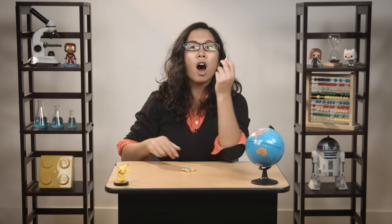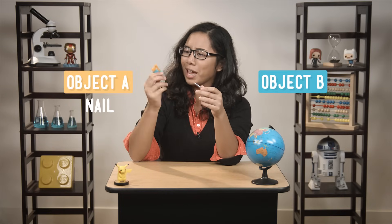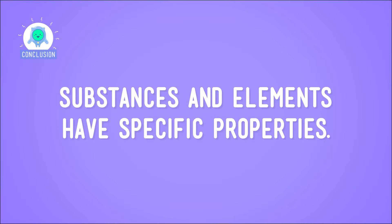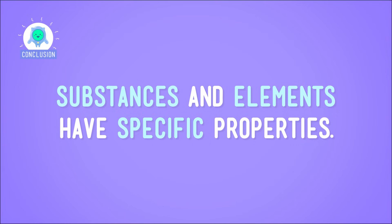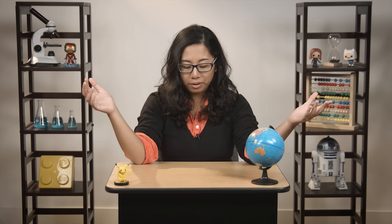And we're right! Object A is a big old nail, and B is my gummy frog. So, substances and elements have specific properties, and because of this, we can use properties like hardness, malleability, or magnetism to tell something about — or even to identify — unknown substances. It doesn't matter if it's candy or handy hardware. And now I'm out of gummy frogs.